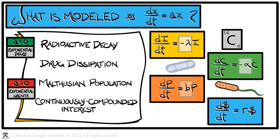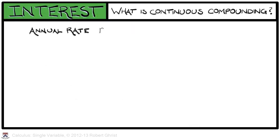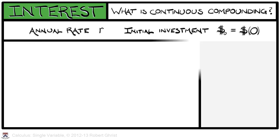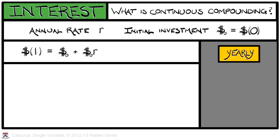It says that the rate of change of the amount of money you have invested is proportional to how much is there. What is that constant of proportionality? Well, that is an investment rate. But what do we mean by continuous compounding? Let's assume an annual interest rate of r and an initial investment of money at time zero. If we were to compound our interest yearly, then after one year, the amount of money we would have would be our initial investment plus that initial investment times the annual interest rate.